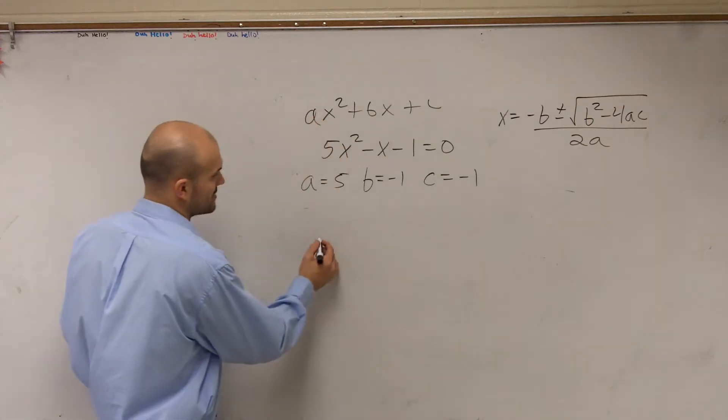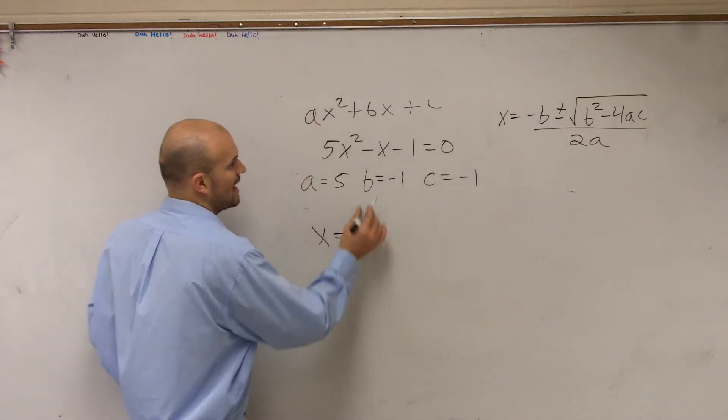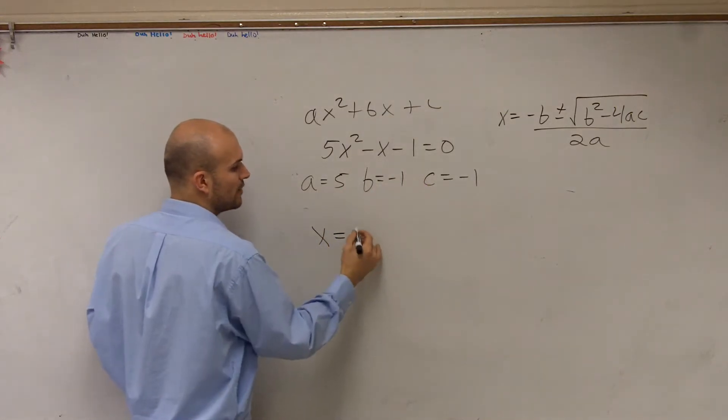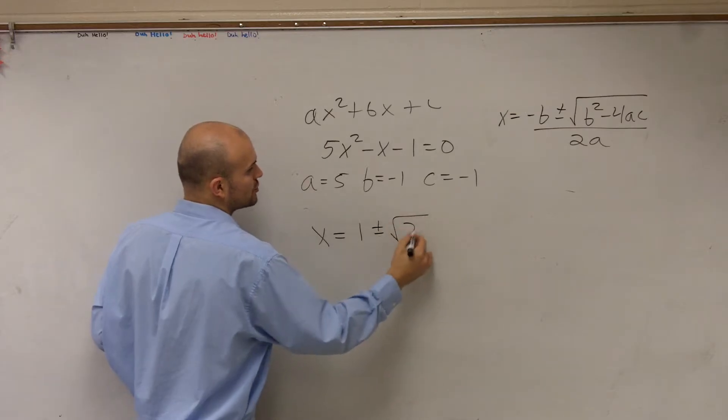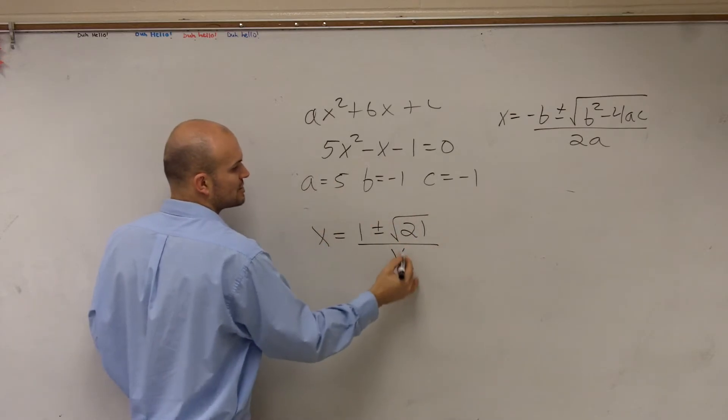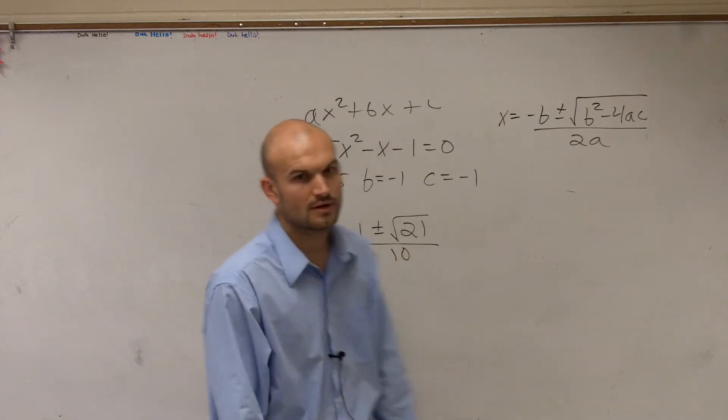So let's go back and write it. So now we have x equals opposite of b. So b is negative 1, so the opposite of negative 1 is positive 1 plus or minus the square root of 21 divided by 2 times a, which is 10. All right?